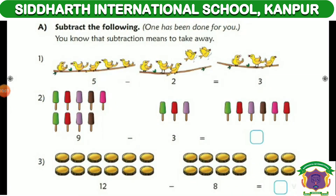Hello students, good morning. Today I am going to start Chapter 3: Subtraction. Subtraction means take away, i.e., cross out. Suppose you have 5 birds and take away 2 from 5, so left here is 3. Count 1 to 3.